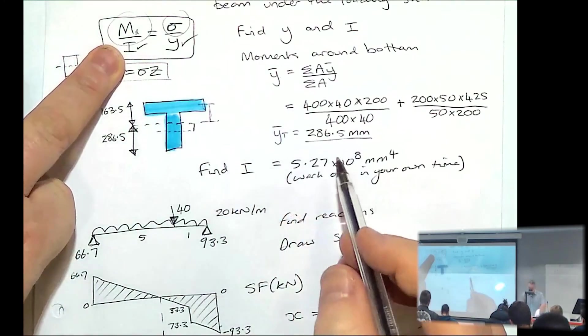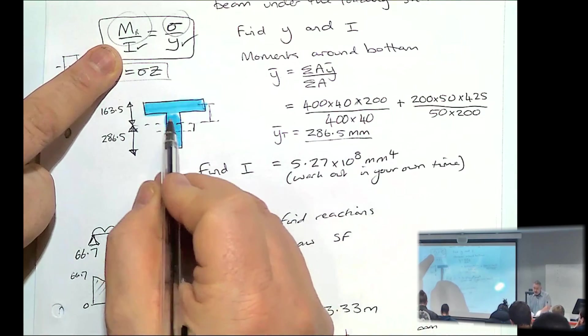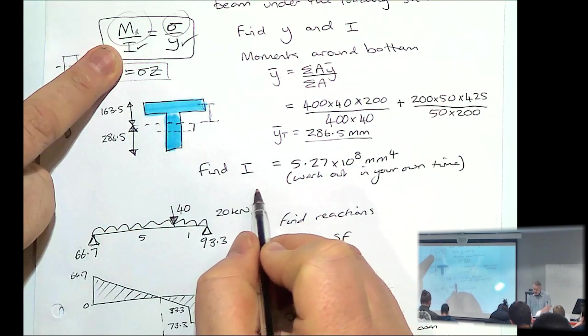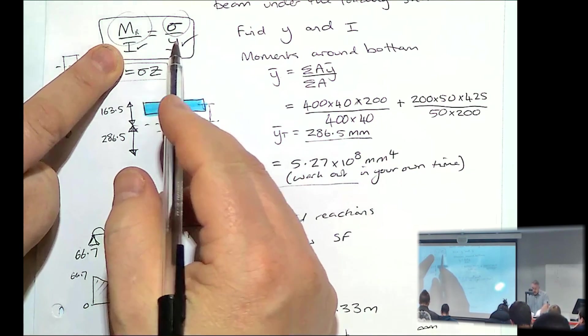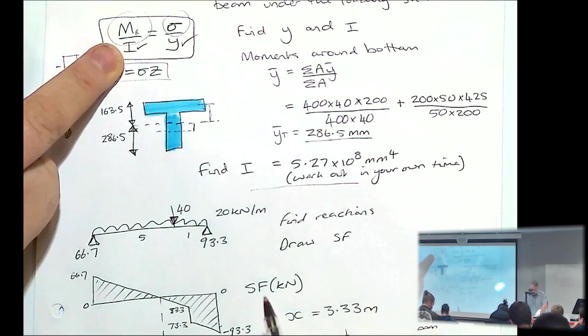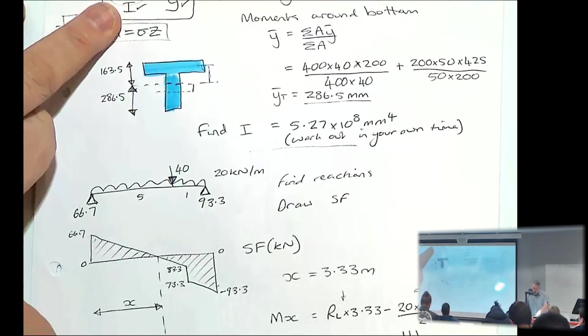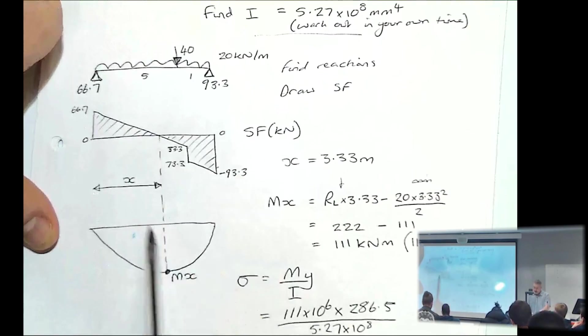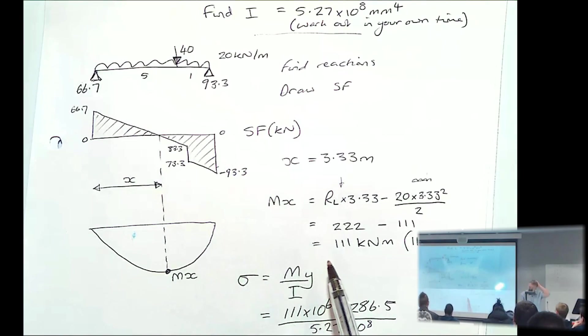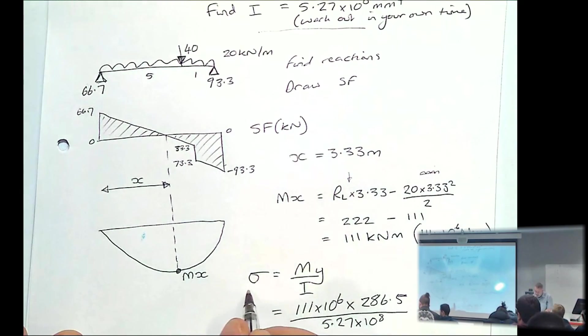In your own time, you've figured out how to work out the I value using the parallel axis theorem. And then our M moment of resistance, we worked out our maximum moment. So that's a bit of a revision for beams. And then rearrange all that, we can find out what the stress is. Thank you.